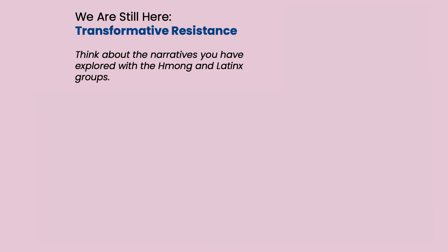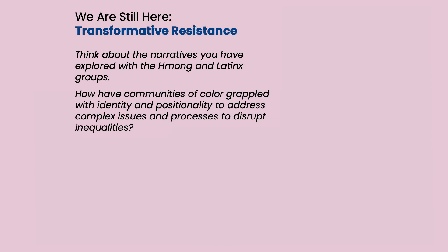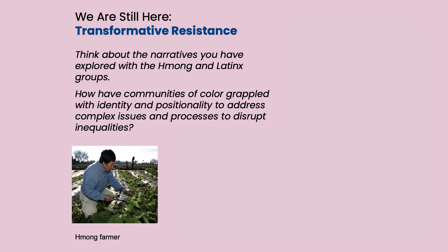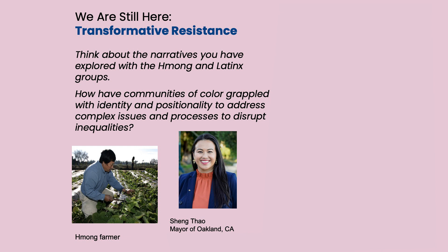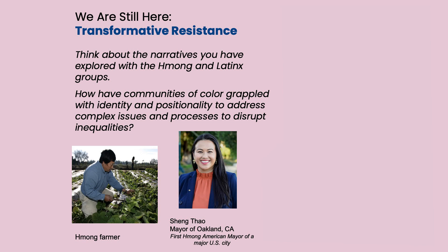Looking at the two experiences — the Hmong community and the Latino community — and thinking about the definition of transformative resistance: how have they grappled with identity and positionality to address complex issues and processes to disrupt inequalities? Here we have a picture of a Hmong farmer, but also a picture of the very first Hmong mayor in California — maybe even the United States. To see that there are various aspects of that spectrum and continuum of where immigrants and refugees land. They are in control of their identity — seeing these two different aspects of the continuum just shows that.